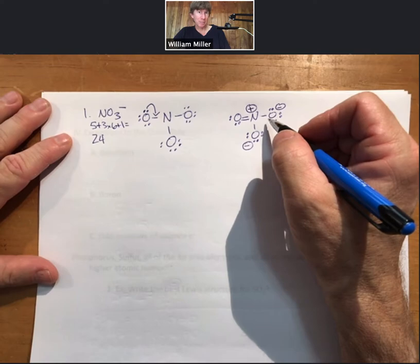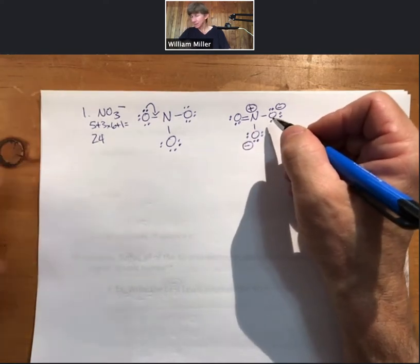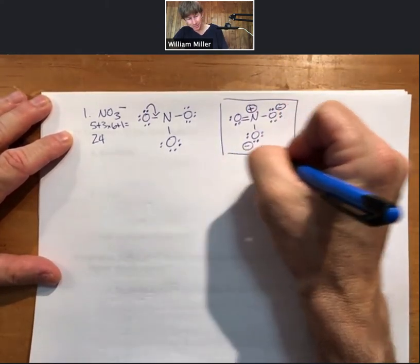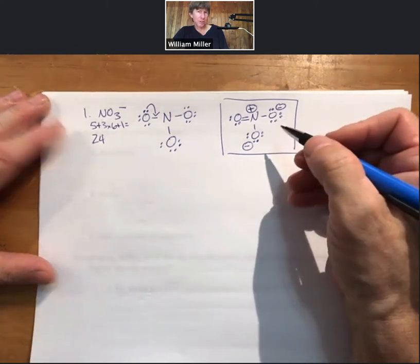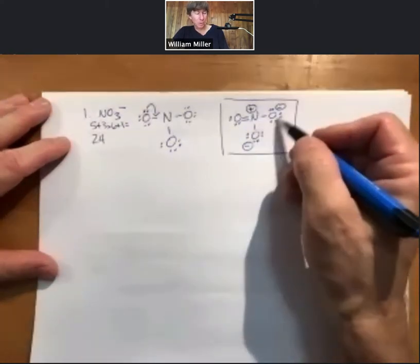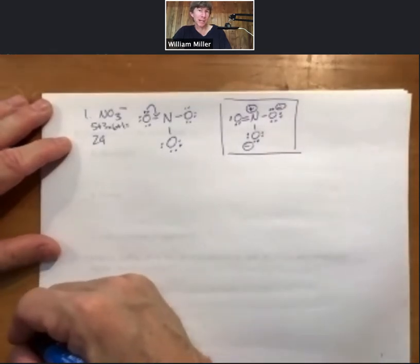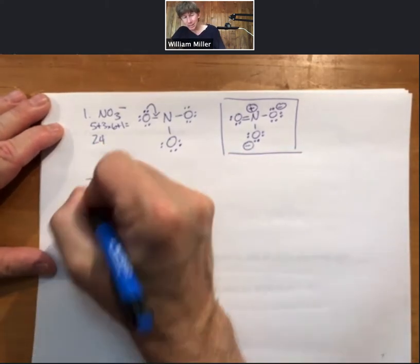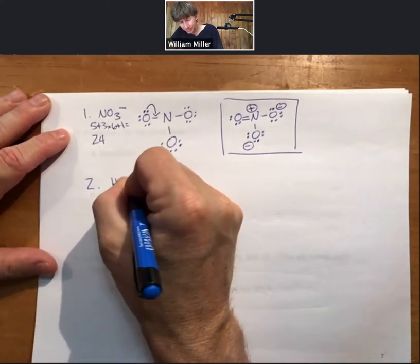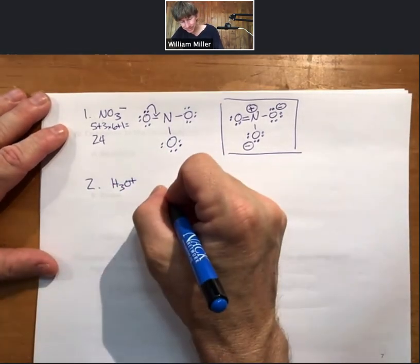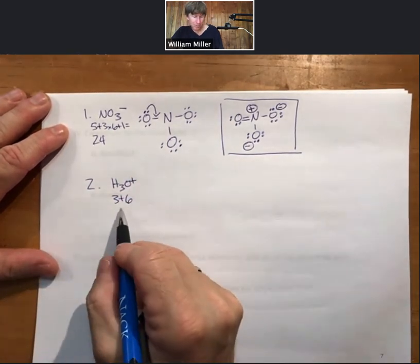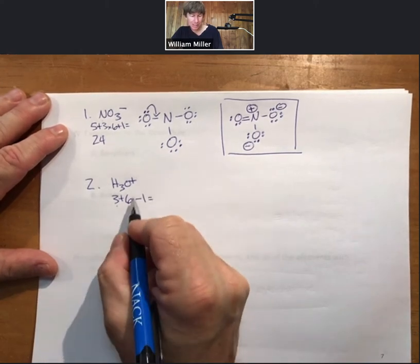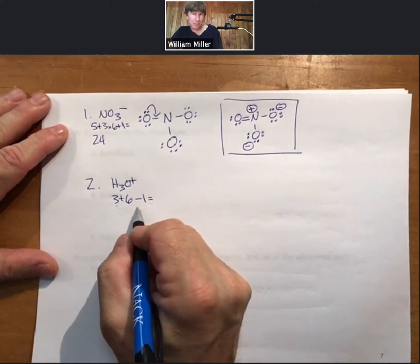That is a lot of formal charge, but it's the best we can do — everybody has octets and there's nothing else to do. Negative formal charges are on the oxygens, which are more electronegative than nitrogen; nitrogen being less electronegative is the center atom with the positive formal charge. This is our best answer. Now let's do H3O⁺.